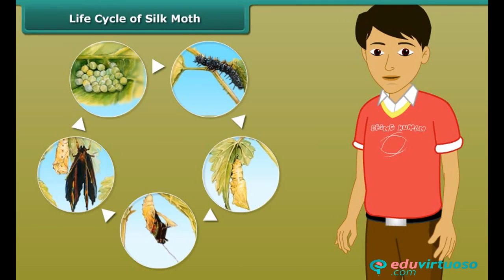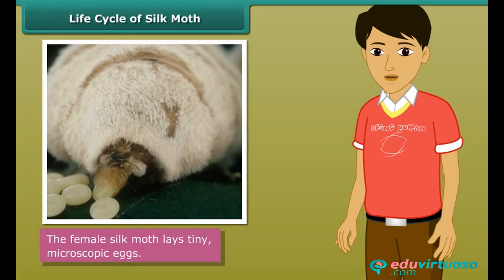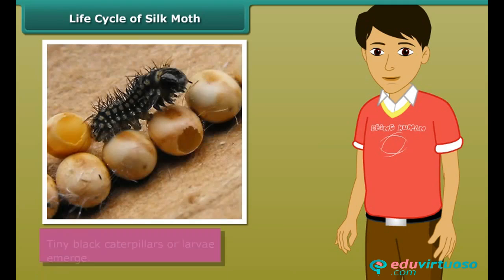The life cycle of a silkworm begins with the laying of a microscopic egg and ends with the emergence of a beautiful moth. The female silk moth lays tiny microscopic eggs at the end of summer. They remain dormant till spring. Come spring, tiny black caterpillars or larvae emerge from these eggs.